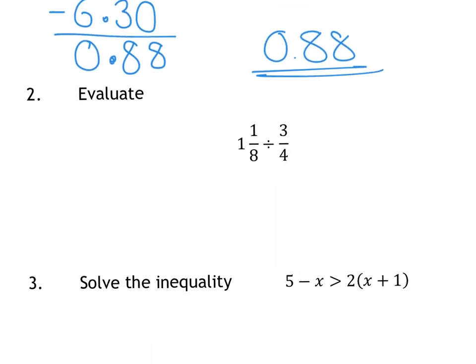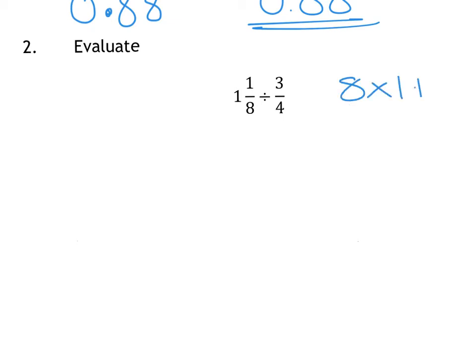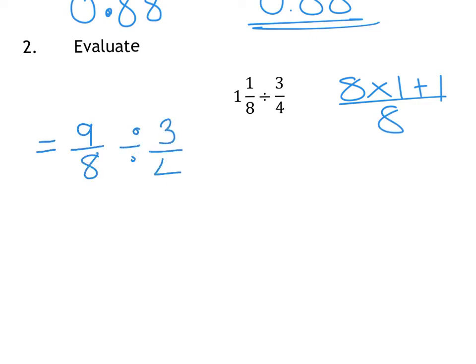For question 2, we have a divide by a fraction. To divide fractions, they must be top-heavy first of all. So I'm going to change that 1 and 1 eighth into a top-heavy fraction. You do 8 times 1 add 1 all over 8 to make that an improper fraction, which gives you 9 over 8. Then for dividing fractions, keep the first one, change the sign to a times, and flip the second one — keep it, change it, flip it is the motto I use.